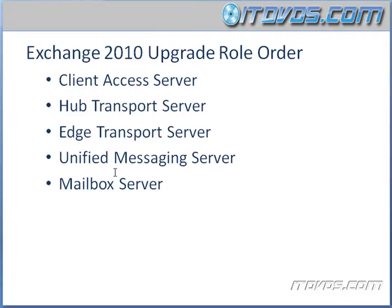But let's say you're combining roles onto a single server. In our example, we're installing the client access server, hub transport server, and mailbox server role all on one server. We can go ahead and install those roles, but really the key is when we actually configure and switch over to them. So first we're going to configure the client access role, hub transport role, and edge transport role, and then switch over to those. Then the real key is when we actually decide to move our mailboxes from Exchange 2007 to Exchange 2010.